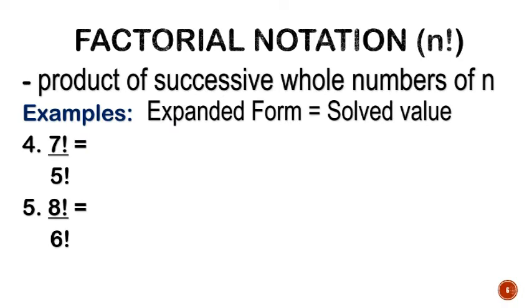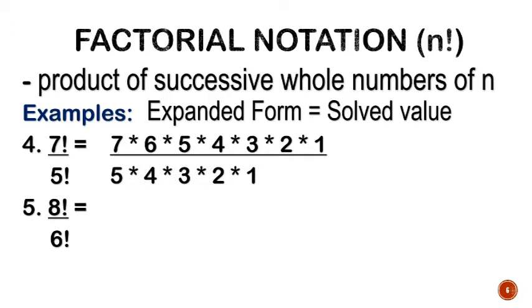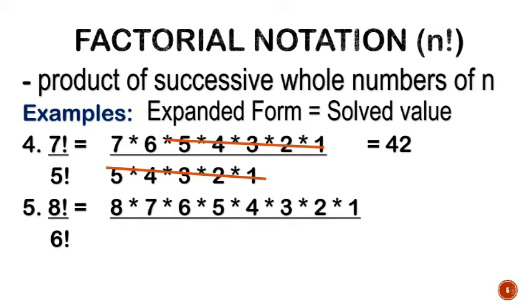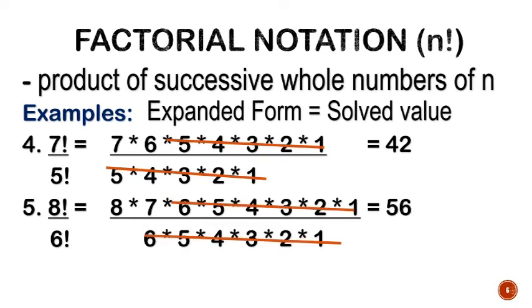For number 4, we have 7 factorial divided by 5 factorial. If we expand 7 factorial, it's 7 times 6 times 5 times 4 times 3 times 2 times 1. Same with 5. Then we can cancel. All similar terms can be cancelled, and what's left is 7 times 6, which is 42. Similarly, for 8 factorial divided by 6 factorial, expanding both but cancelling similar terms, 8 times 7 will be equal to 56.